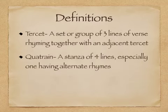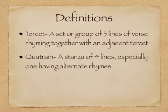Next, definitions. A tercet is a set or group of three lines of verse rhyming together with an adjacent tercet. A quatrain is a stanza of four lines, especially one having alternate rhymes.